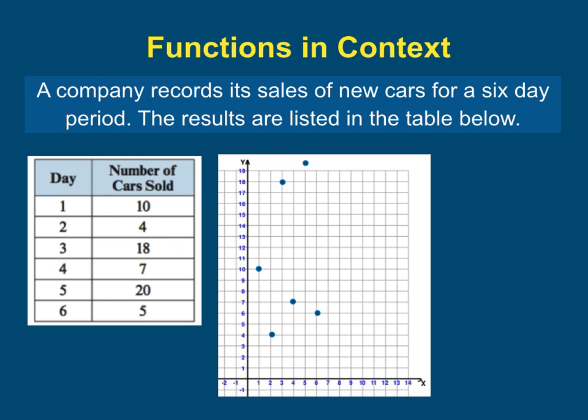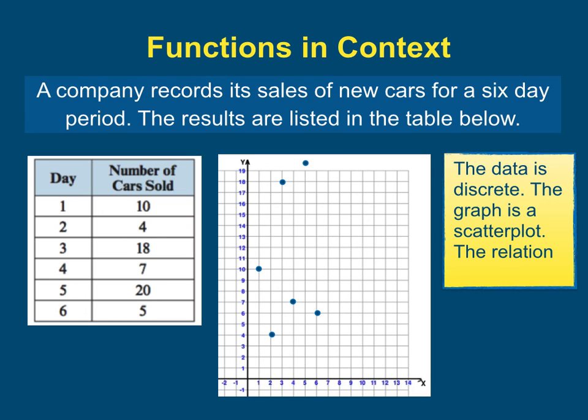Now hopefully it makes sense to you to leave these points as separate distinct points on that plane. Do not connect them with a curve or any kind of straight lines. So this data then is discrete. It is a discrete function. Every input has exactly one output and further the graph is a scatter plot. So this is a type of discrete function.